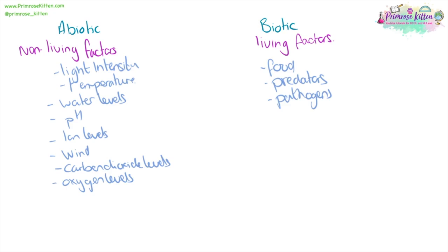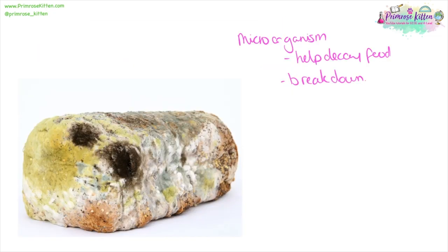An increase, reduction, removal, or introduction of any of these factors can have a dramatic impact on a community. For example, the introduction of a new predator or pathogen could wipe out a community. An increase or decrease in temperature could mean that an organism's food source is gone or that an organism can't survive in that environment. Plants and animals aren't going to be able to survive without sufficient levels of carbon dioxide and oxygen. Microorganisms are part of the biotic and abiotic system and help break down old things — for example, old food — so that the components can be recycled back through the system.